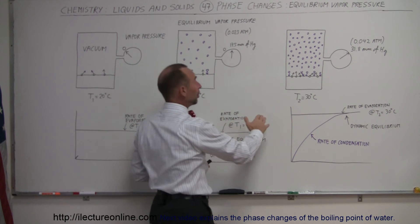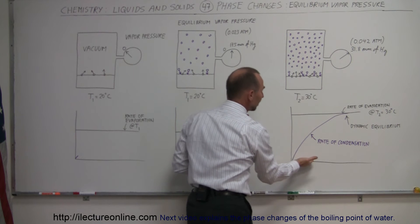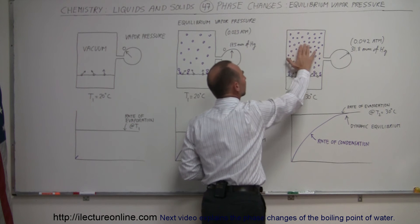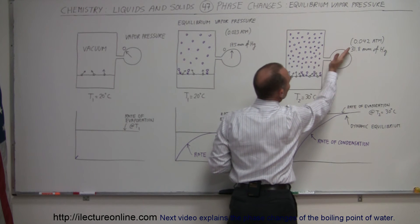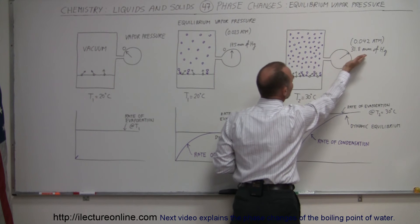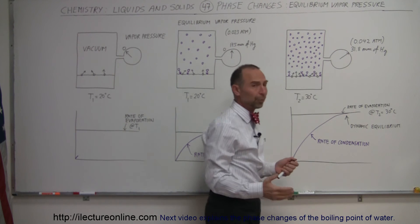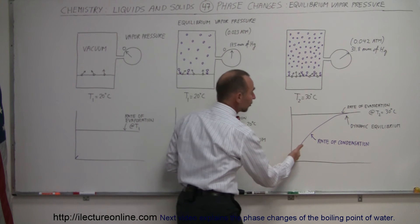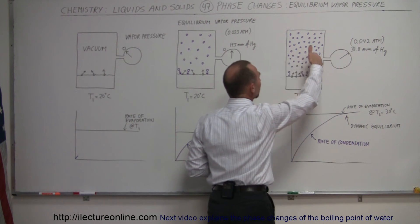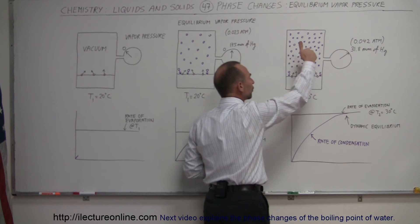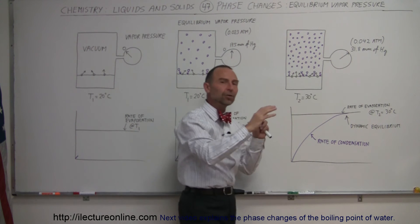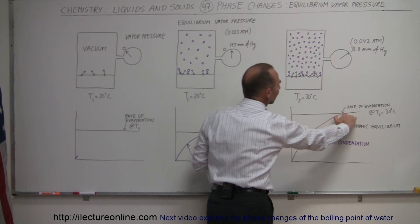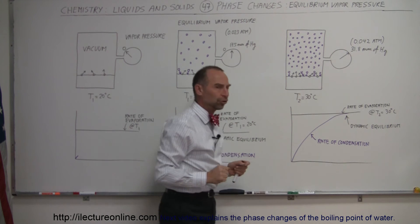If we now increase the temperature of the water and bring it up to 30 degrees, the rate of evaporation will increase. That will cause more molecules to go into the container area. The vapor pressure of the water molecules will now have increased to 31.8 millimeters of mercury, which is about 4.2 percent of atmospheric pressure. The rate of condensation will then also increase, because you have more molecules up there bouncing against the water surface and being reincorporated into the water at the bottom. And again, you'll reach a dynamic equilibrium, but it'll be at a higher rate and at a higher vapor pressure.